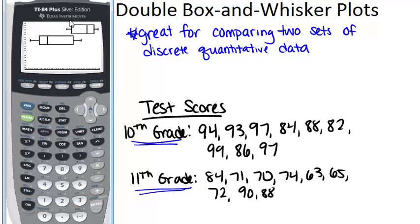Remember that if you want to pick out the specific points you can push trace and then you can highlight and find out those numbers. The median is 93 for 10th grade and the median of the first half Q1 is 85.